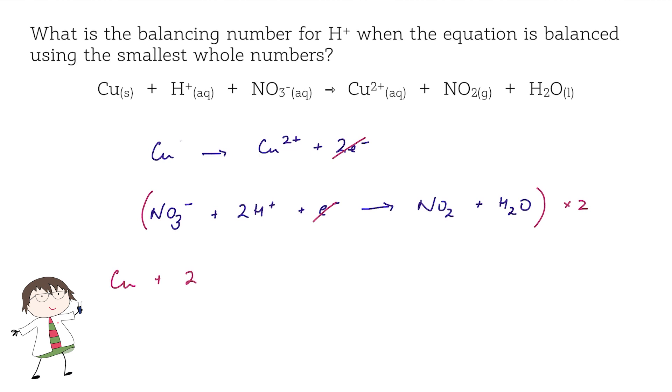plus two nitrate plus four hydrogen ions goes to form the copper two plus plus two NO2 plus two H2O.